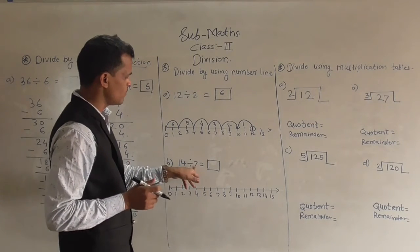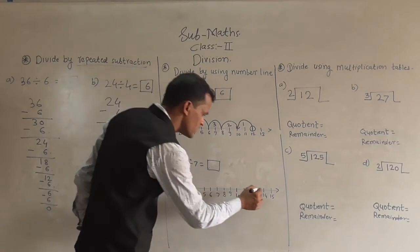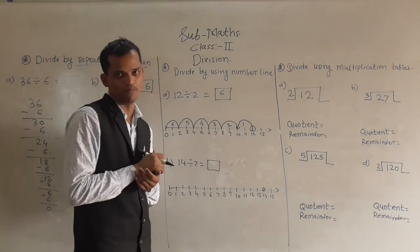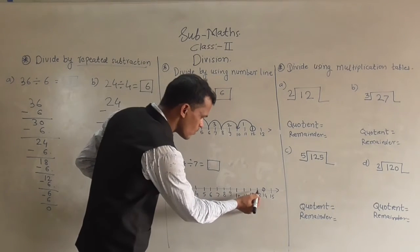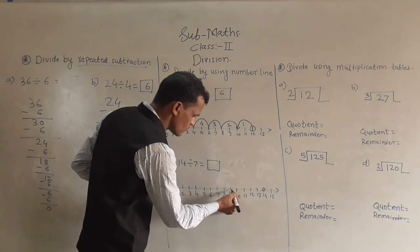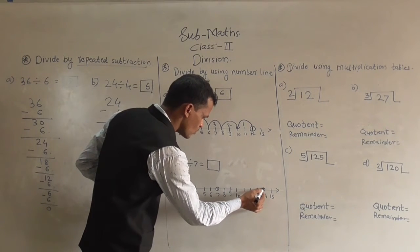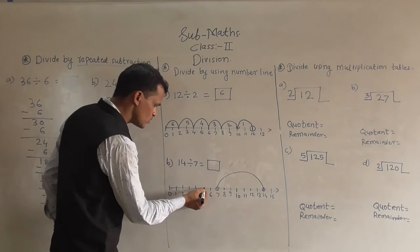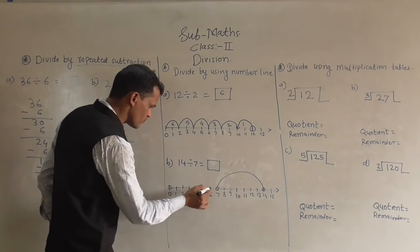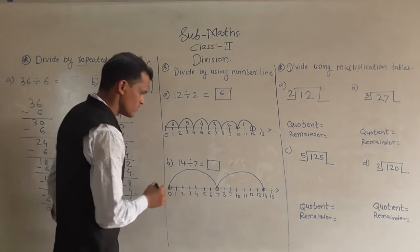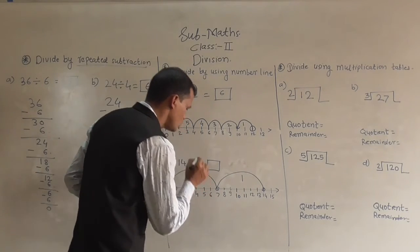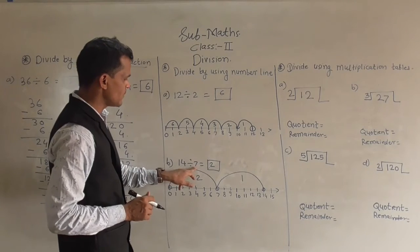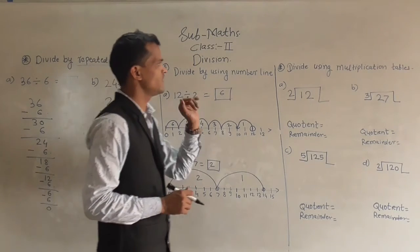Next: 14 divided by 7. Locate 14 on the number line. Every time count 7 steps backward: from 14, go 7 steps to reach 7, then count 7 steps again to reach 0. Count the jumps: 1 and 2. So 2 is our answer. Cross-check: 7 twos are 14, so our answer is correct.